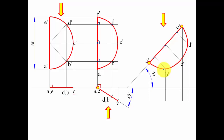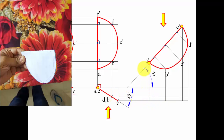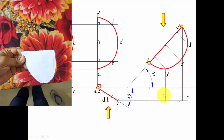Now bring projector lines downward from the step three front view and projector lines horizontally from the step two top view to find the final top view intersection points. For point a: vertical from front view meets horizontal from top view. Similarly locate b, c, d, and e by matching their respective vertical and horizontal projectors. Join all points in proper sequence with a smooth curve to get the final top view.